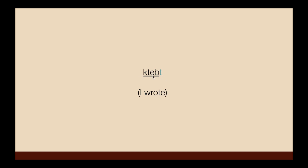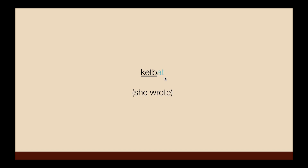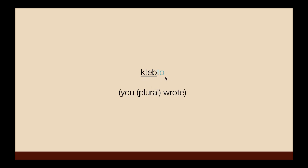Ktept — I wrote. Ktepti — you wrote. Ktept — he wrote. The third person pronoun in the past tense can be considered the root verb, so 'he wrote' is ktept, the root verb. Kteptna — we wrote. Kteptu — you all wrote. Kteptu — they wrote.